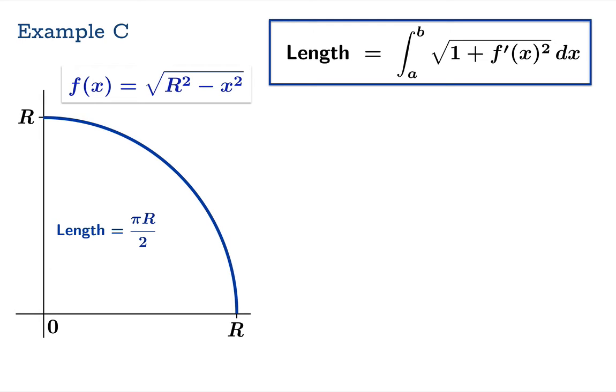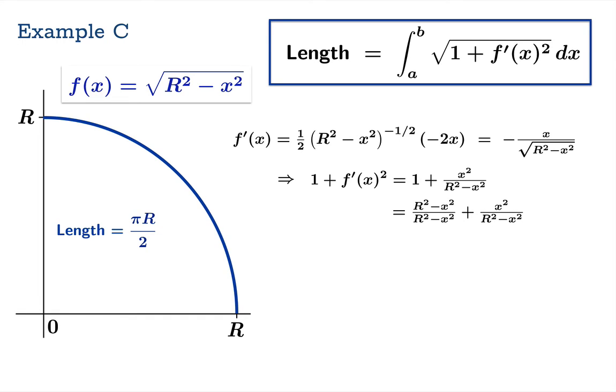Now the integrand in this case for our arc length integral is found by first taking the derivative which simplifies to negative x over the square root of r squared minus x squared. Then we're going to look at the expression 1 plus the square of the derivative and notice that that simplifies to r squared over r squared minus x squared. And now we can take the square root of that and we obtain this integrand for our arc length integral.